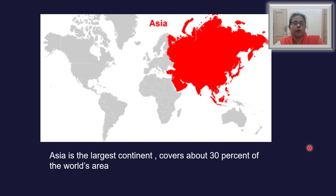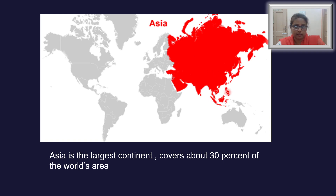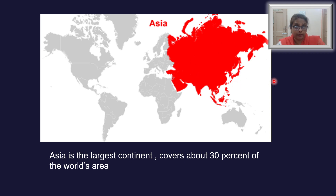When you look at the map of the world, you find that Asia occupies a very large area of land — that is to the tune of nearly 30% of the land which the earth has. So all these continents — that is Europe, North America, South America, Africa, and Australia — together make 70% of the land, while Asia alone is occupying 30% of the land area of the earth. Don't you think that it is a very large continent?